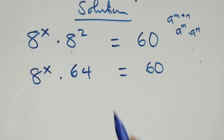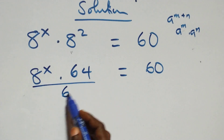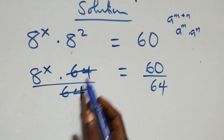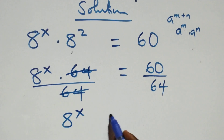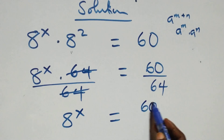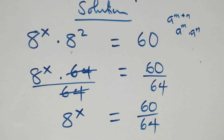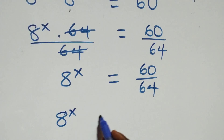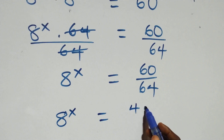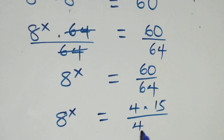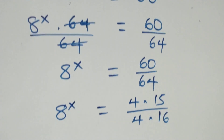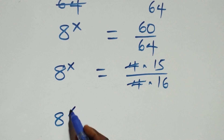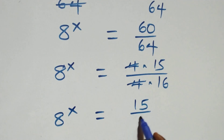Then the next step here, we divide both sides by 64. We divide this side by 64 and also this side by 64. The 64s cancel each other and we have 8 raised to power x equals to 60 over 64. We can write this as 4 times 15 over 4 times 16. The 4s cancel each other and we have 8 raised to power x equals to 15 over 16.